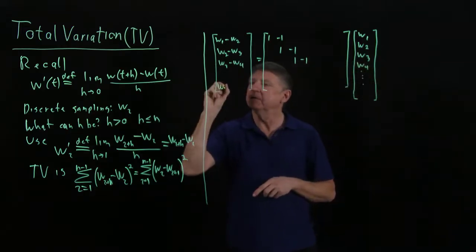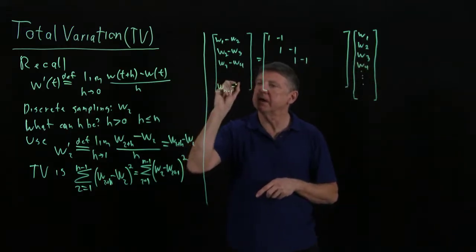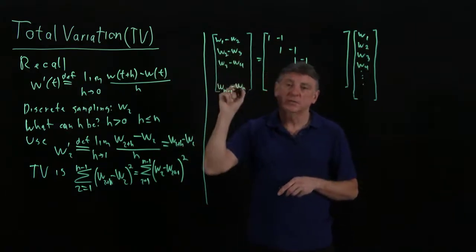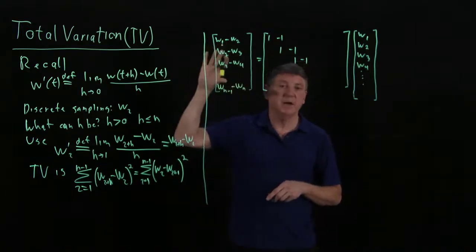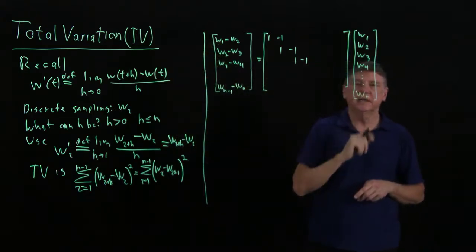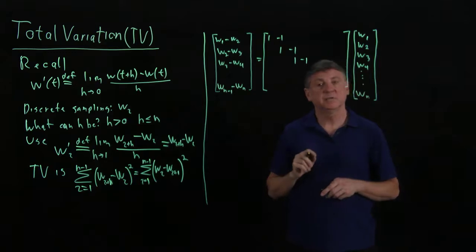And then w3 minus w4 will be skip skip 1 minus 1 times w3, w4, and so on. And then at the end we'll have w n minus 1 minus w n. So we see that this is one smaller. This has n minus 1 entries if there are n entries in our original w vector.